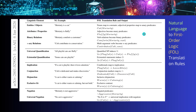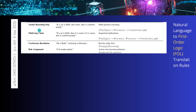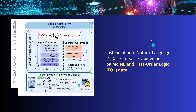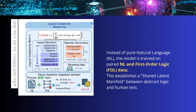They make a mapping from linguistic elements to first-order logic by defining translation rules. For example, the natural language sentence "Moriarty is a cat" maps to a first-order logic expression. This is done for implication, conjunction, disjunction, exclusive-or, negation, atomic reasoning, and multi-step chains. The model is then trained on paired natural language and first-order logic data structures, operating on a shared latent manifold between abstract logic and human text.